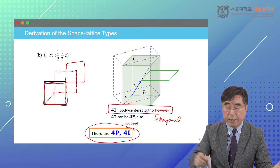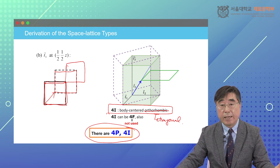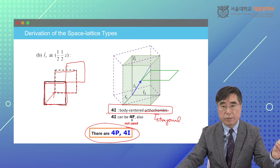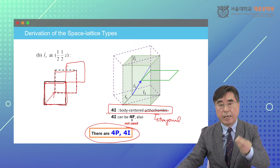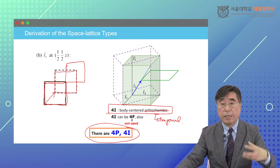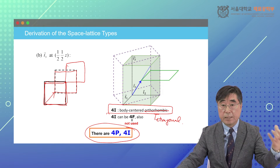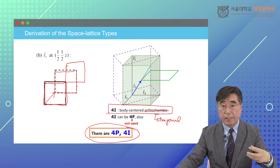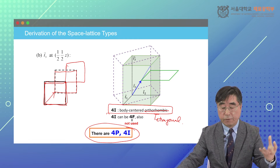So there are 4P and 4I — primitive tetragonal and body-centered tetragonal Bravais lattices — all belonging to the tetragonal crystal system, which has the information of at least one four-fold rotational symmetry.